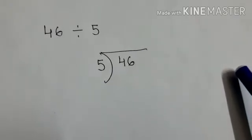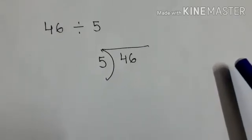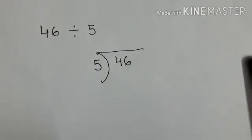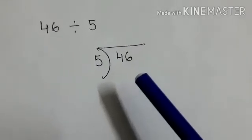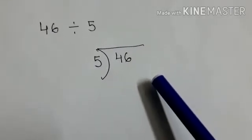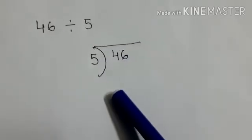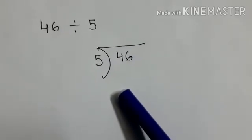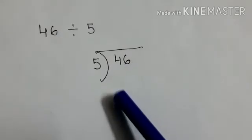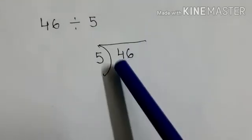9 5's are 45. And 10 5's are 50. So which is nearer to 46. Means less than 46. 45 or 50. 45. So 5 9's are 45.